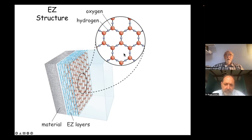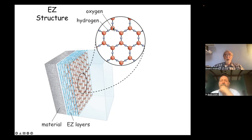The structure looks like this — it consists of a honeycomb sheet made up of oxygens and hydrogens. The oxygens are sitting at the vertices like this, and the hydrogens are sitting here.